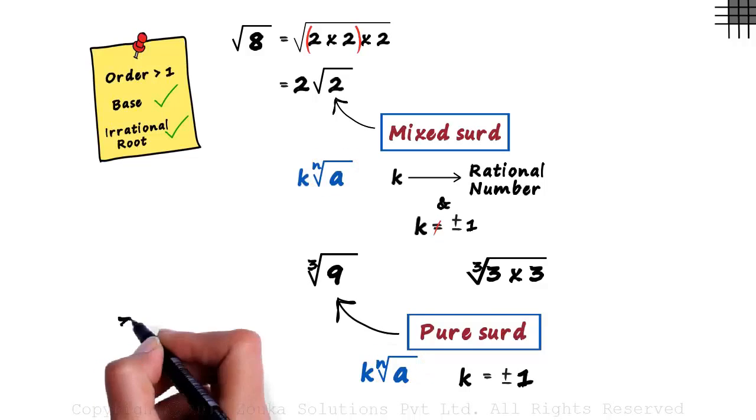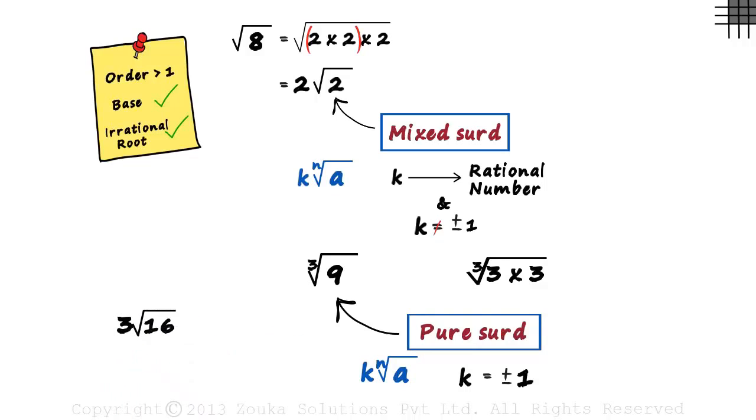If we have something like three root sixteen, we cannot call it a mixed surd since root sixteen itself is not a surd.